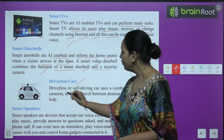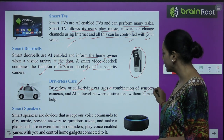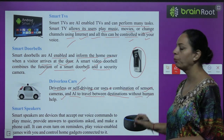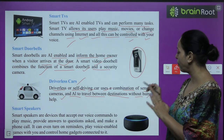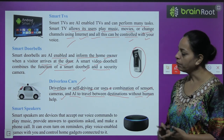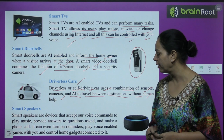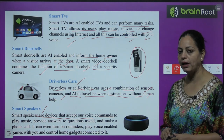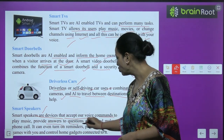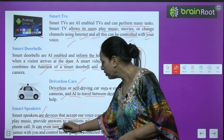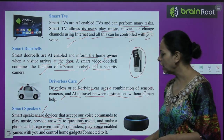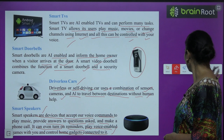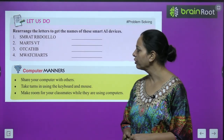Driverless or self-driving cars use a combination of sensors, cameras, and AI to travel between destinations without human help. Smart speakers are devices that accept voice commands to play music, provide answers to questions, and make phone calls. They can also set reminders, play voice-enabled games, and control home gadgets connected to them.